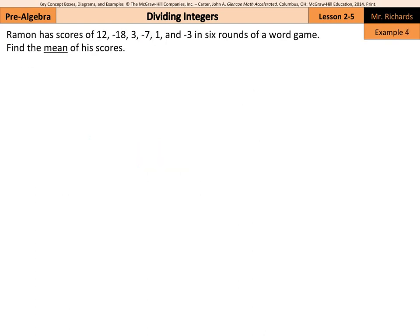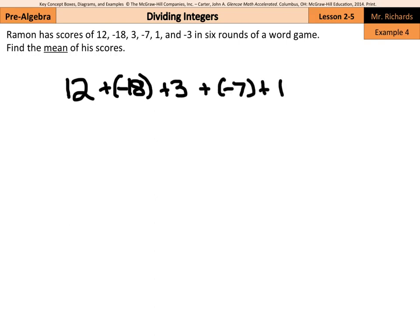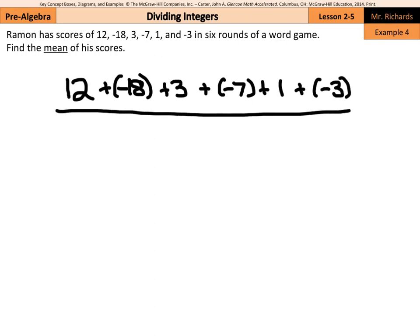The other part of this lesson involves finding the mean. Ramon has scores of 12, negative 18, 3, negative 7, 1, and negative 3 in six rounds of a word game. To find the mean, add all the numbers and divide by how many numbers you have. So we take 12 plus negative 18 plus 3 plus negative 7 plus 1 plus negative 3, and since there are six rounds, we divide by 6.